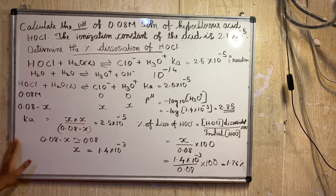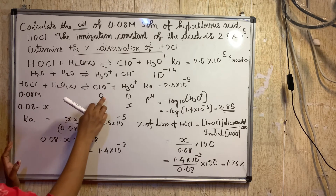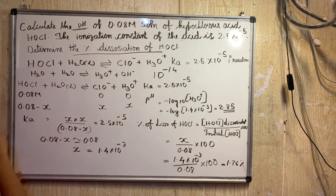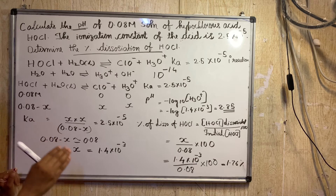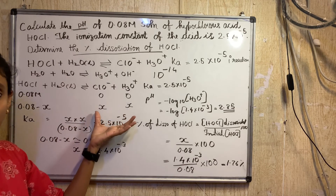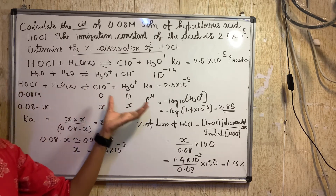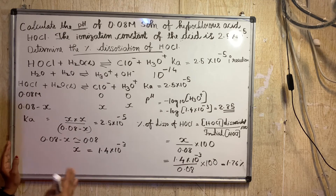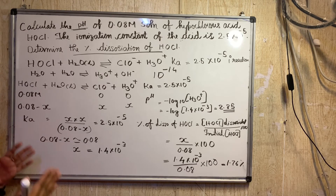We set up the ICE table. Initial concentration of HOCl is 0.08 M; ClO⁻ and H3O⁺ start at 0. At equilibrium, HOCl concentration decreases to 0.08 − x, while ClO⁻ and H3O⁺ each increase to x. Ka = [ClO⁻][H3O⁺] / [HOCl] = x² / (0.08 − x).